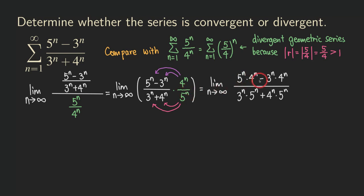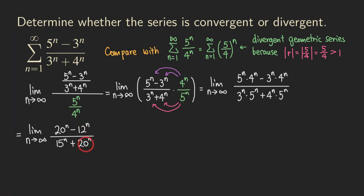You can simplify each product into a simpler form. In the numerator we are going to get 20 to the n minus 12 to the n. In the denominator we are going to get 15 to the n plus 20 to the n. Since n is approaching infinity, we get infinity over infinity — an indeterminate form. So we are going to factor out the dominant terms: factor out 20 to the n from the numerator and also 20 to the n from the denominator.